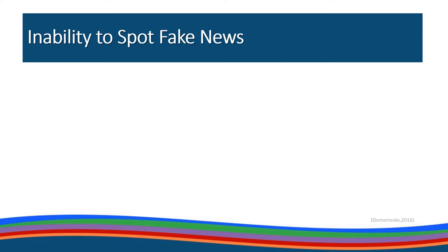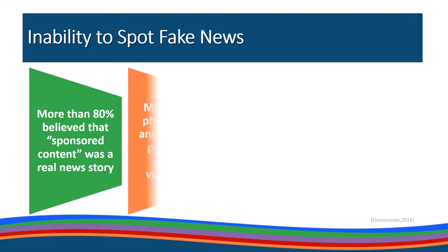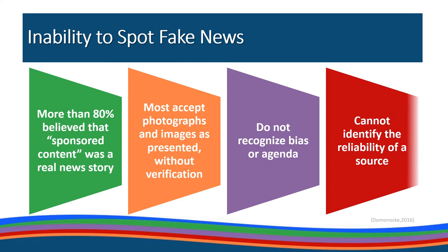A study from Stanford researchers evaluated students' ability to assess information sources and described the results as dismaying, bleak, and a threat to democracy. More than 80% believed that sponsored content was a real news story. Most high school students accepted photographs and images as presented without verifying them. They do not recognize bias or agenda, and they cannot identify the reliability of a source. Fake news is being passed on without thinking, and we really can't blame young people because we've never taught them otherwise.